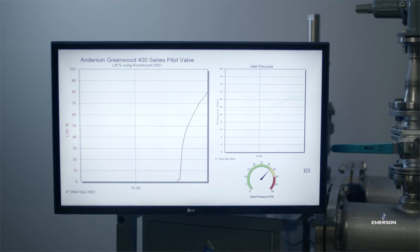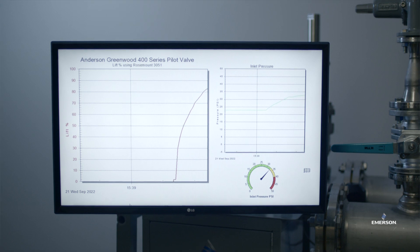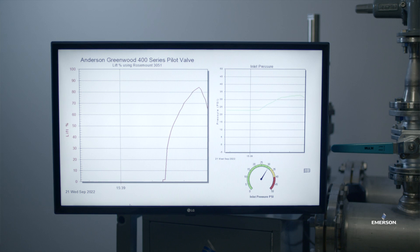Emerson's design is able to sense the differential pressure between the main valve inlet and the dome and convert the differential pressure to valve lift percent. Knowing valve lift percent, as well as the capacity of the valve, the end user can calculate the volumetric flow that is being released during a pressure relief event.